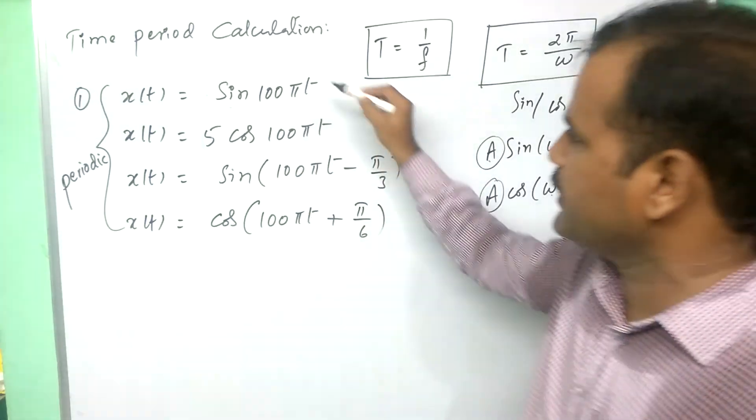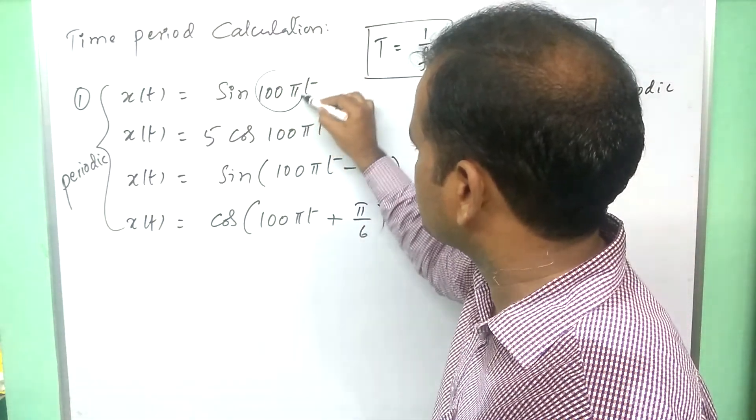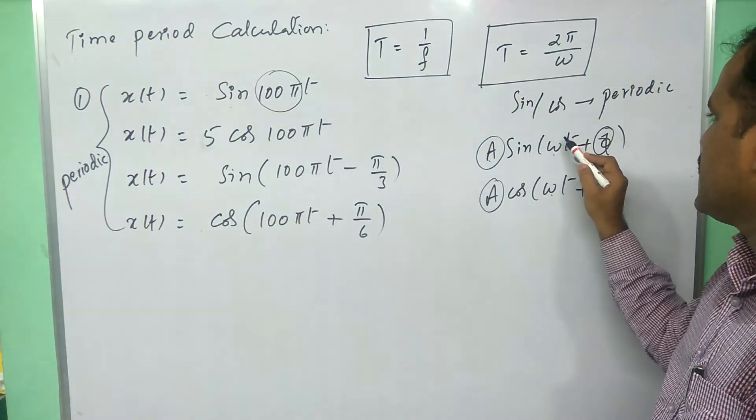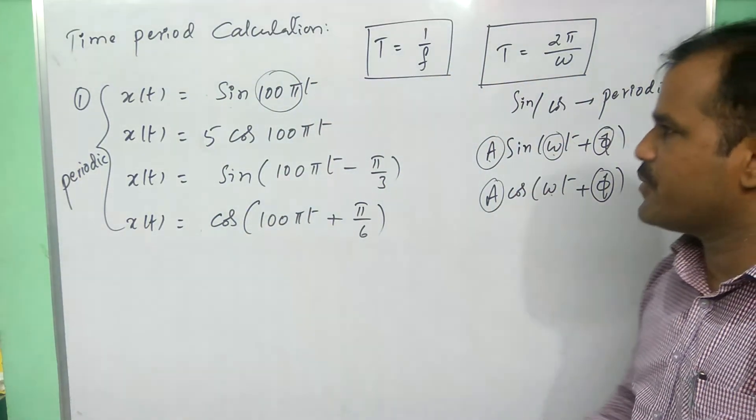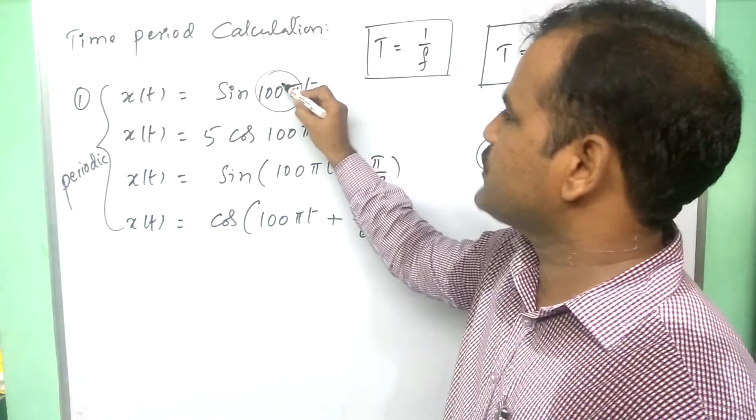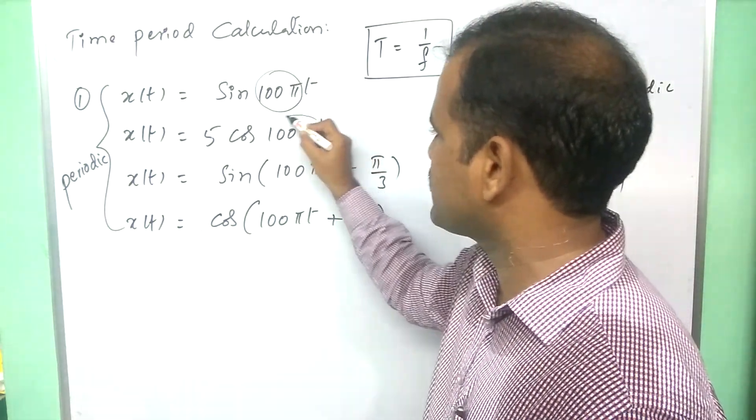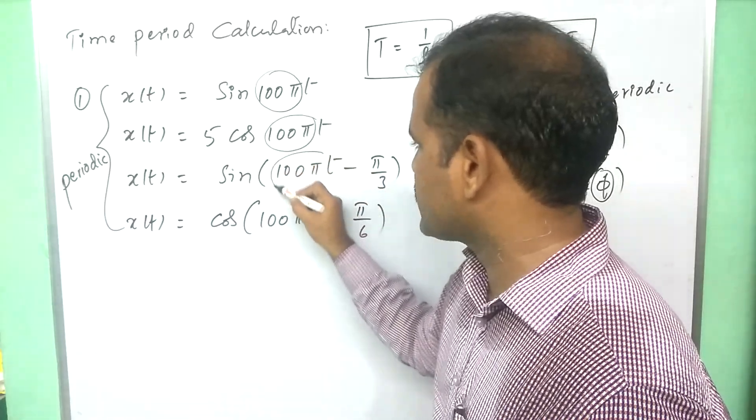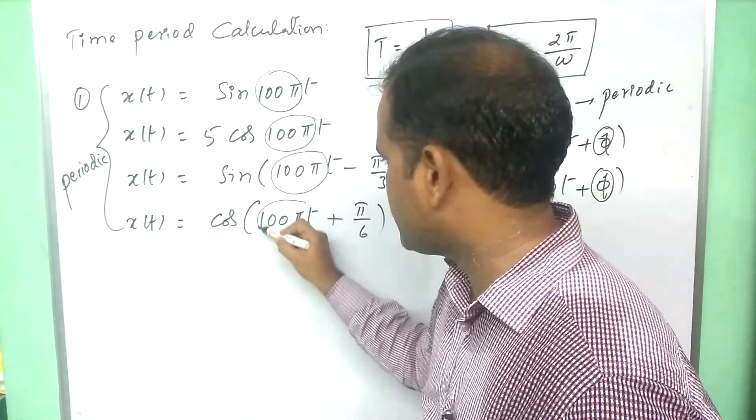What we need is only compare this sinusoidal function with the standard functions. Because t multiplication factor is nothing but omega. So, here t multiplication factor is 100 pi. Here t multiplication factor 100 pi. This is also 100 pi.